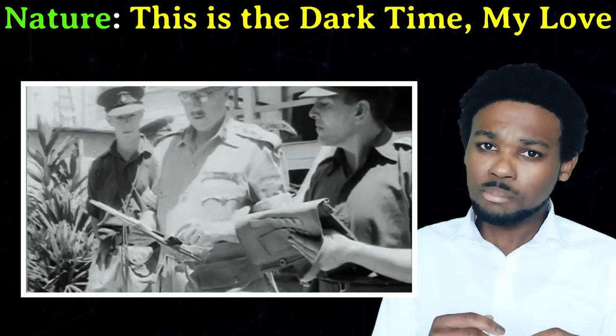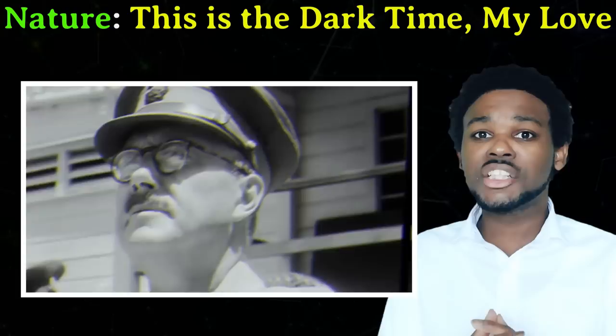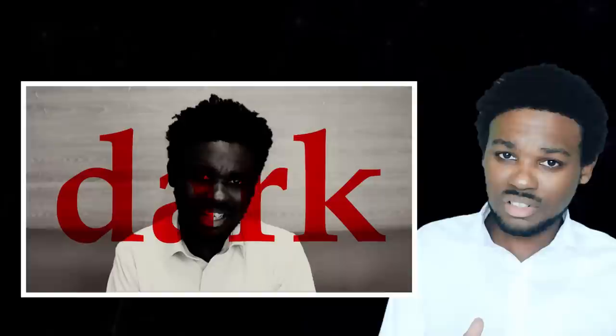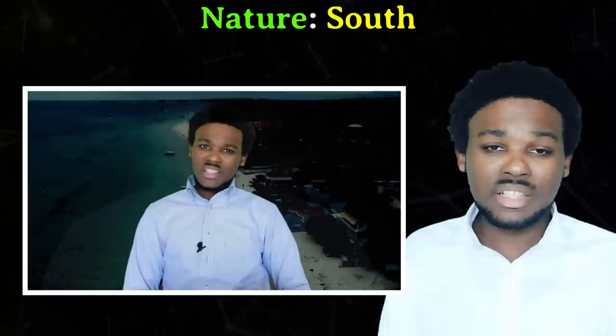In This Is The Dark Time My Love, the main themes are war, suffering, oppression, and patriotism. But nature plays an important role as well. Throughout the poem, we see that nature reflects the suffering and oppression of the Guyanese people. Nature, in various forms, serves as a symbol throughout the poem. We have the flowers bending their heads, then the sun hiding behind the clouds, and the slender grass being trampled upon.